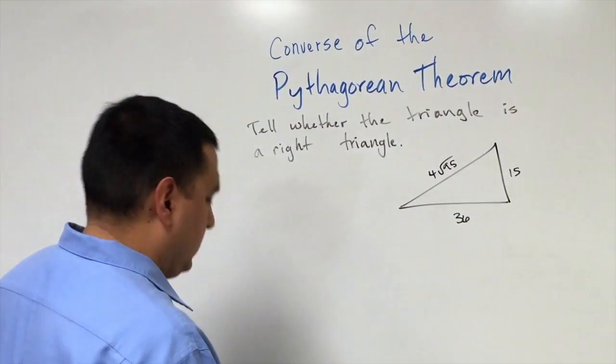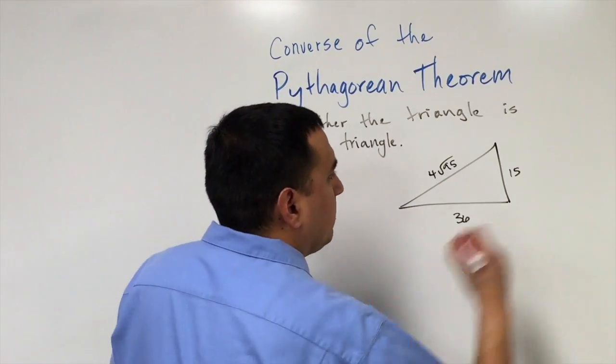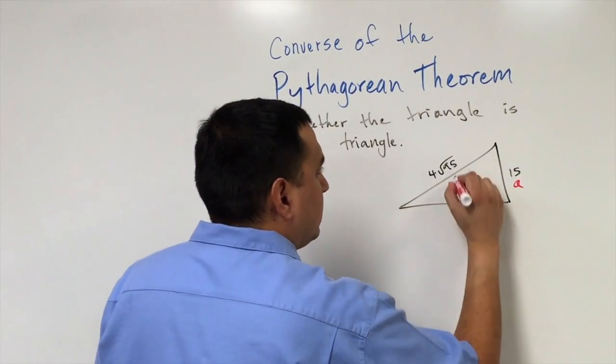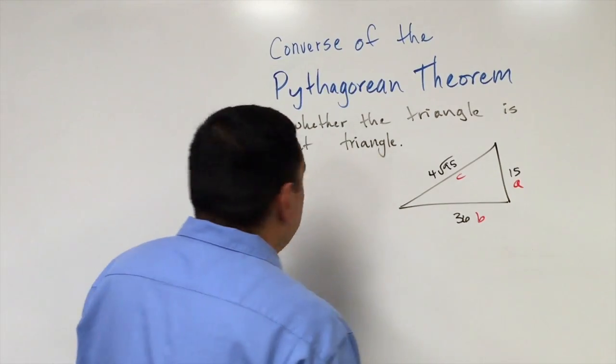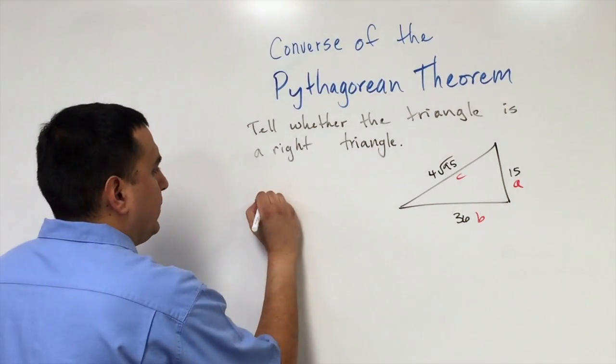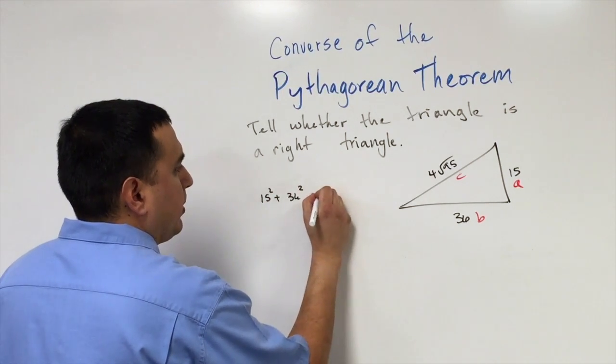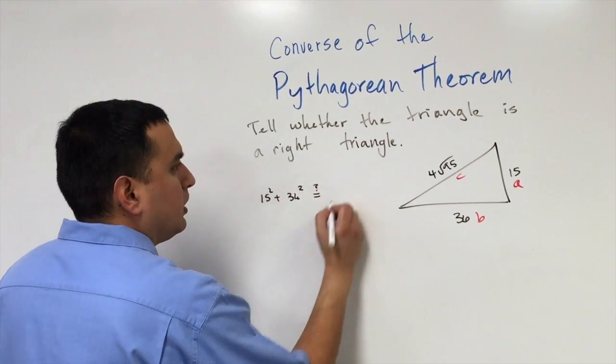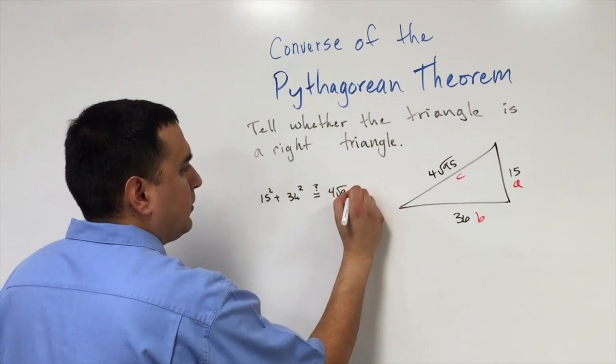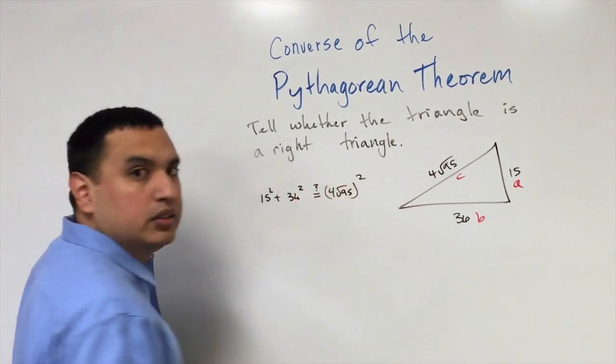Look at this next example. I'm going to let this one be my a, my b, and then this will be my c. Plugging this into the formula, I'm going to have 15 squared plus 36 squared. And we want to see, is that equal to 4 square root of 95 squared?